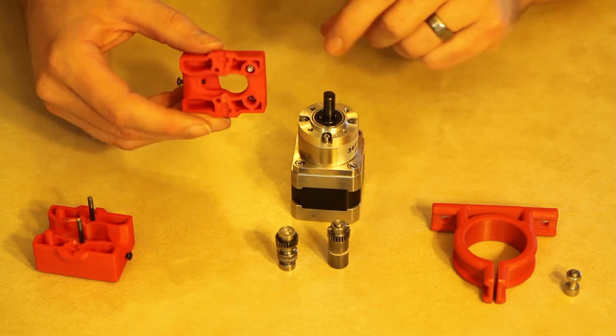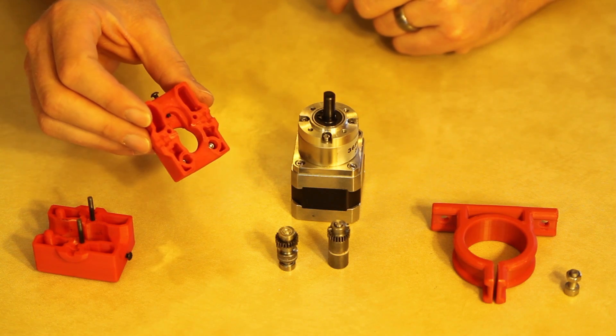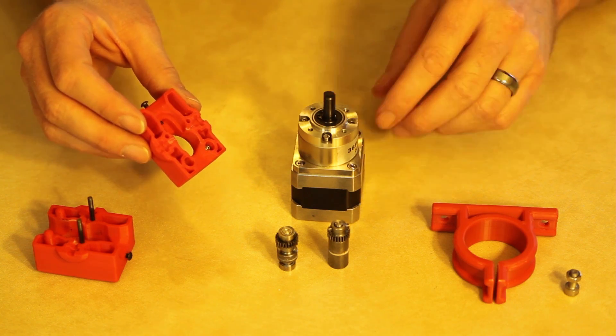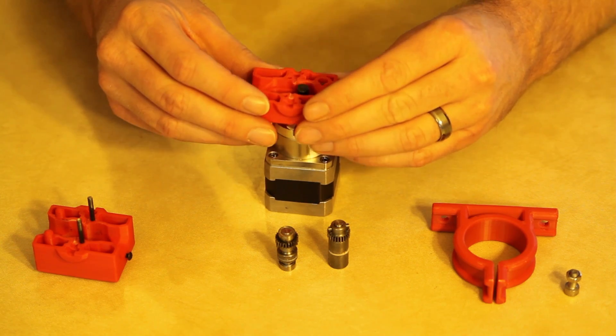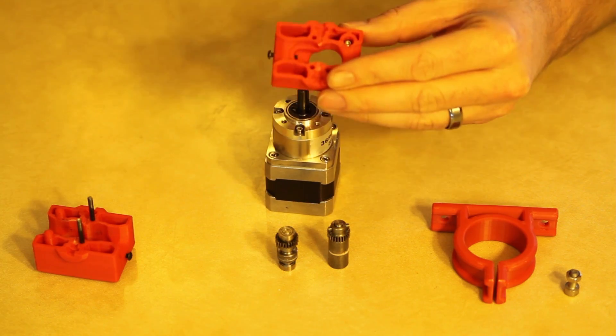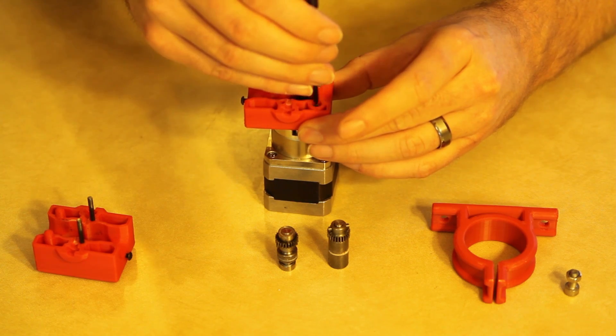And then there's a back cover. Now this back cover just has two bolts retaining it to the Planetary's front section on this. So let's drop those in.